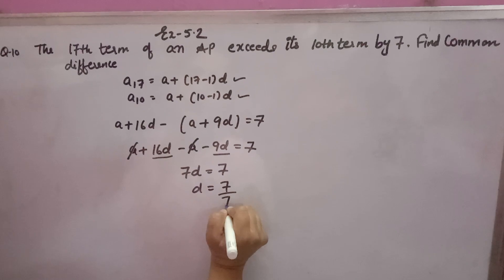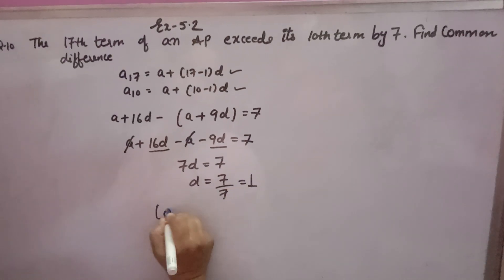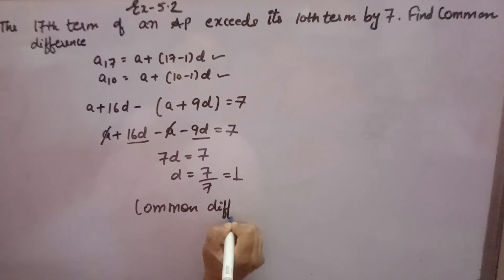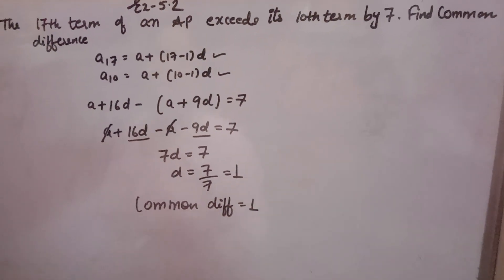7D equals 7, that is 1. So the common difference is equal to 1. This is the answer. Thank you.